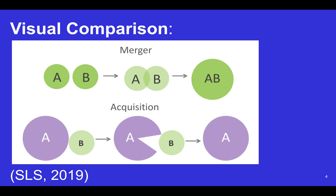I'll give you a quick visual comparison. On the top is a merger, on the bottom is an acquisition. In terms of the merger diagram, there are two green circles — companies A and B — on the far left and middle. You'll see the two circles intersect and then they become a larger A-B company, like a combination of the two.